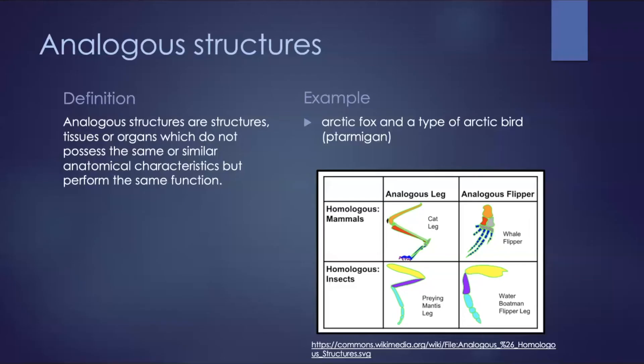Analogous structures are also proof for evolution, not showing the structures shared by organisms inherited from a common ancestor, but rather demonstrating that similar selective pressures can produce similar adaptations or beneficial characteristics.